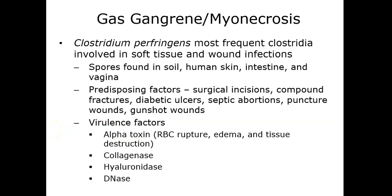Clostridium perfringens causes gas gangrene, or myonecrosis — the production of gas in muscles causing necrosis or tissue death. It is one of the most frequent clostridial infections involving soft tissues. Spores can be found in soil and various regions of the human body. Predisposing factors include surgical incisions, compound fractures, diabetic ulcers, and puncture wounds — any place with high cell death, lack of blood flow, and necrotic tissue where the organism can establish and grow.